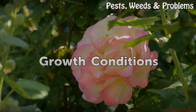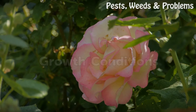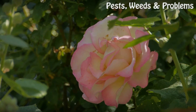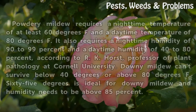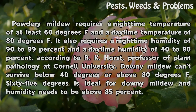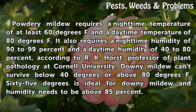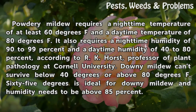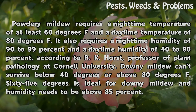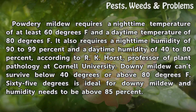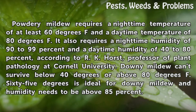Growth conditions: Powdery mildew requires a nighttime temperature of at least 60 degrees Fahrenheit and a daytime temperature of 80 degrees Fahrenheit. It also requires a nighttime humidity of 90 to 99 percent and a daytime humidity of 40 to 80 percent.